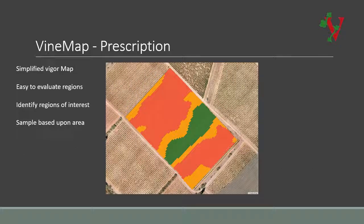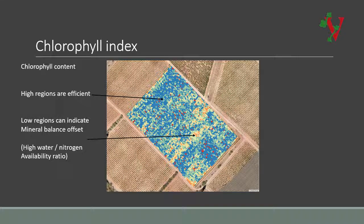The vine map prescription map is based upon simplified regions of interest which are easier for farmers to manage in order to create simplified treatment plans. Additional maps are also available, such as the chlorophyll index map and the anthocyanin index map, which can be used to better plan irrigation and fertilization use.